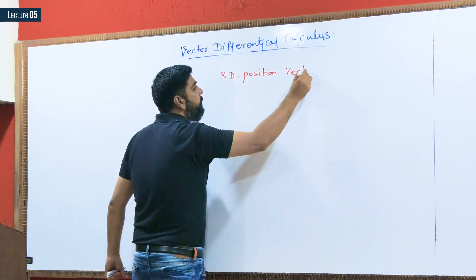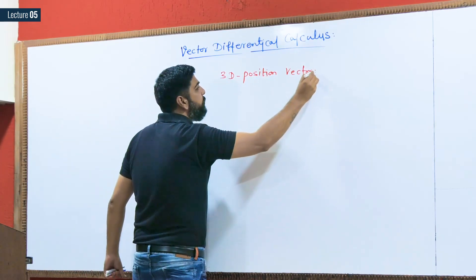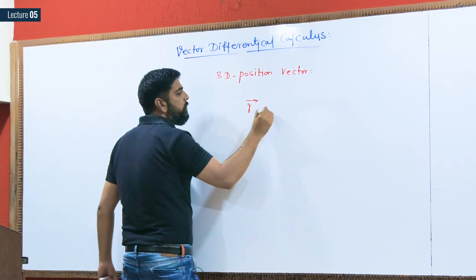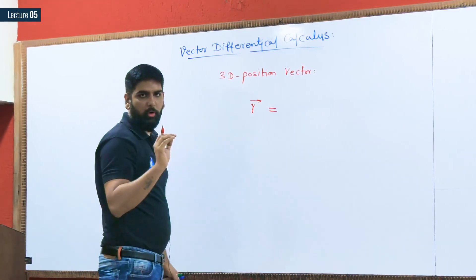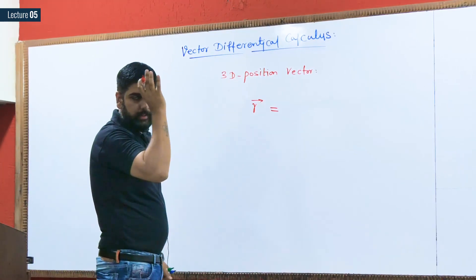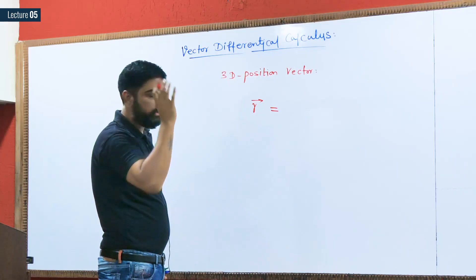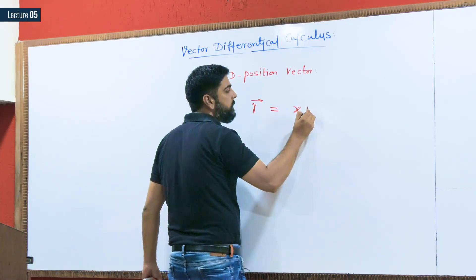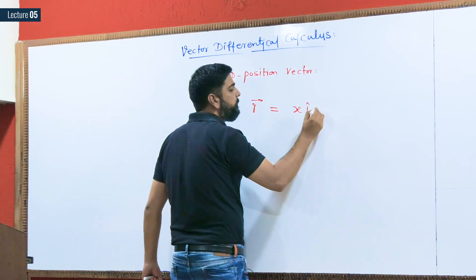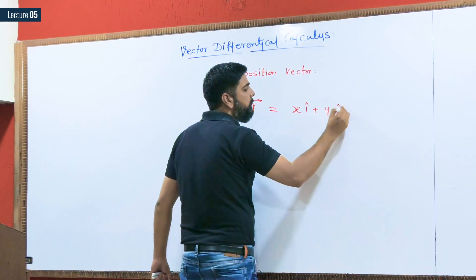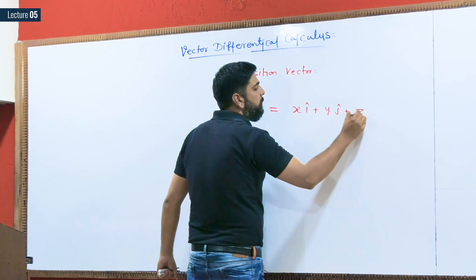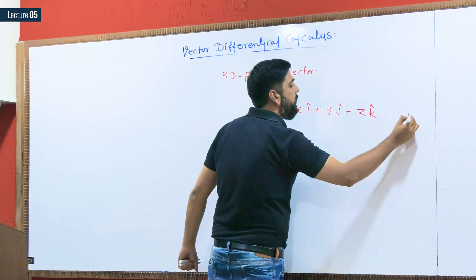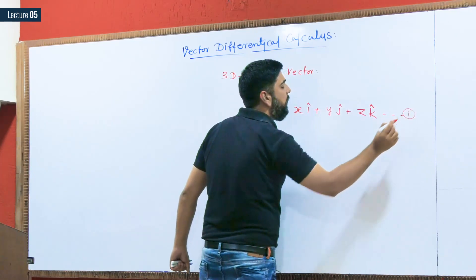What do we mean by the three-dimensional position vector? This is nothing but vector R. It is a favorite topic for all IITs and GATE examinations. Vector R is nothing but x i-cap plus y j-cap plus z k-cap. This is what we call vector R.